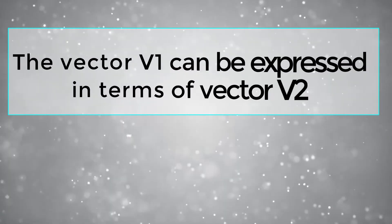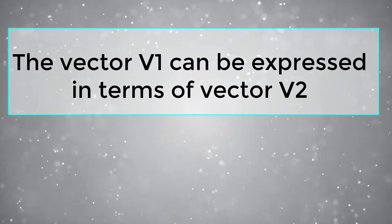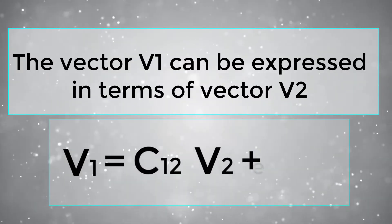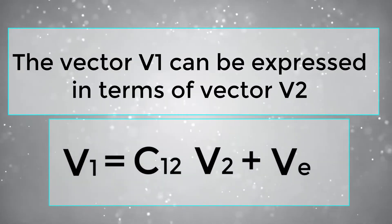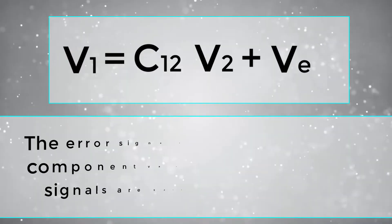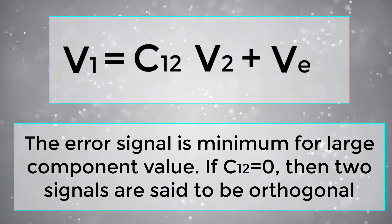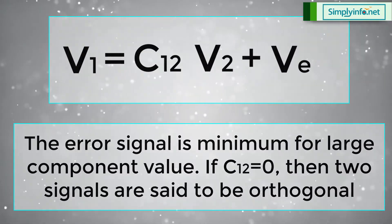The vector V1 can be expressed in terms of vector V2: V1 equals C12 into V2 plus Ve, where Ve is the error vector. The error signal is minimum for large component value. If C12 equals zero, then two signals are said to be orthogonal.